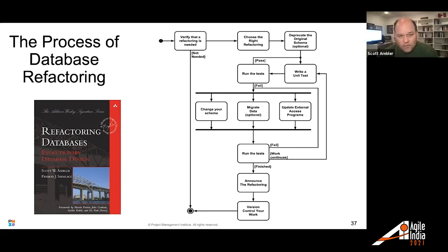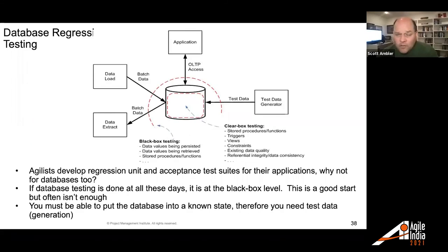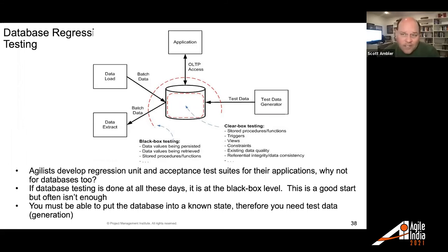To support this, just like you need to support code refactoring, you need a regression test suite in place for your database. I need to be able to make a change and then run a test suite to make sure I haven't broken anything, or to identify what I did break so I can go fix it. We need to adopt regression testing techniques in the data world as well. If you consider data an asset, shouldn't you test it? Shouldn't you do what you need to make sure it's a quality asset? We should have automated regression test suites for our databases, just like we have them for our applications.